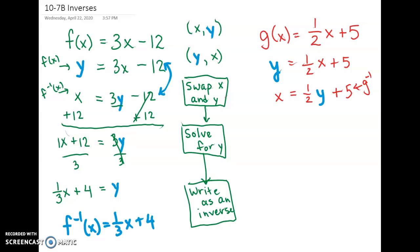But we have to solve for y because we're not quite done yet. So we're going to subtract 5. So we get x minus 5, because those aren't like terms, equals 1 half y.